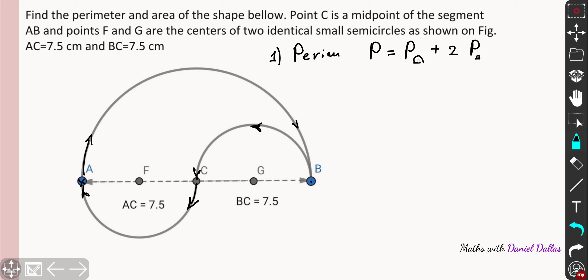So P stays for the perimeter of the big semicircle which is simply pi R. And what about perimeter of each small semicircle is basically pi r to the small radius multiplying.